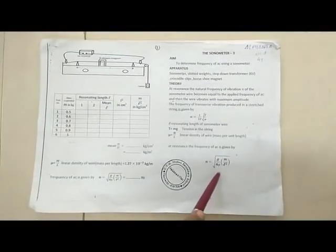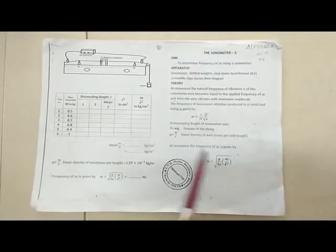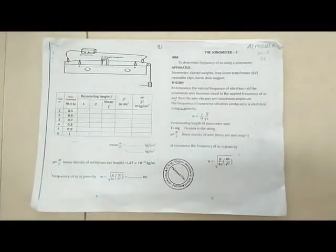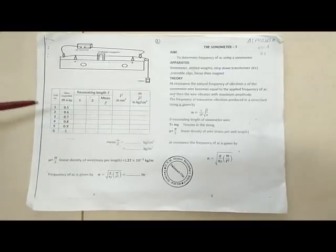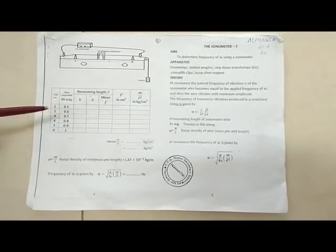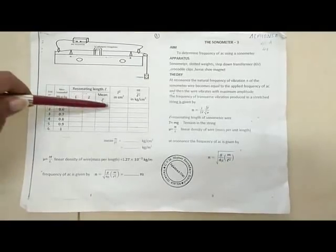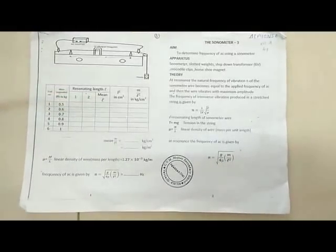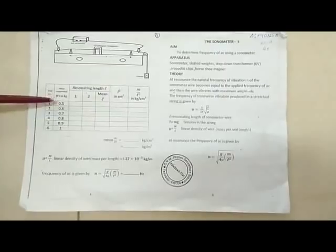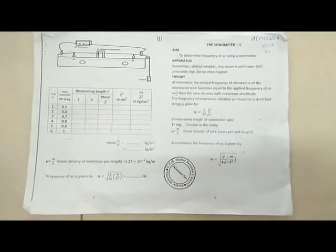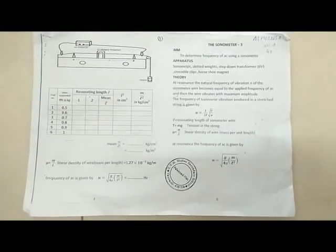m by L square can be calculated from the observation column. We can see the mass suspended such as 0.5, 0.6 and so on, and the resonating length corresponding to this mass can be calculated using sonometer.